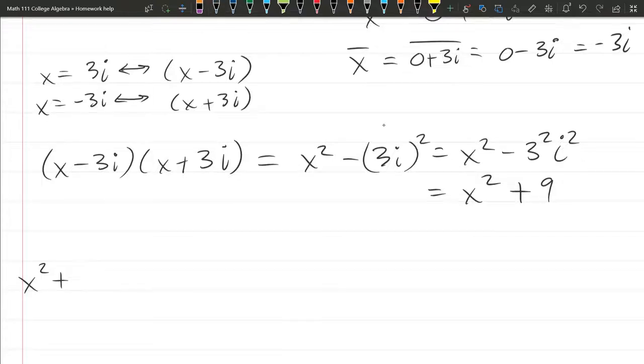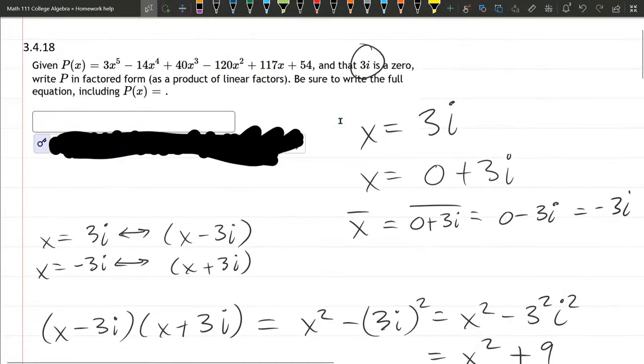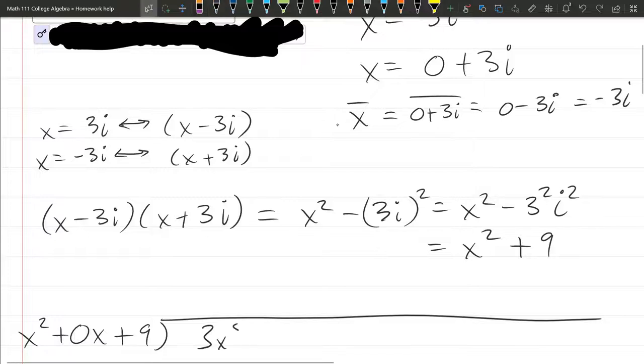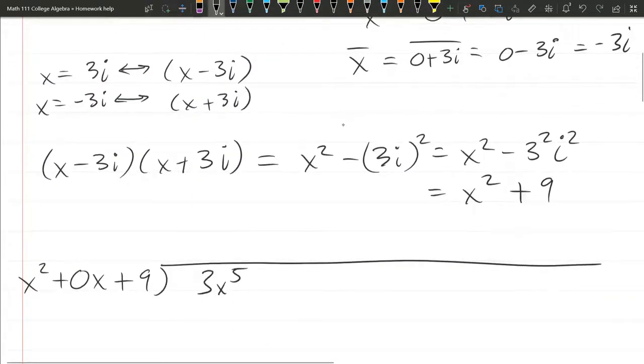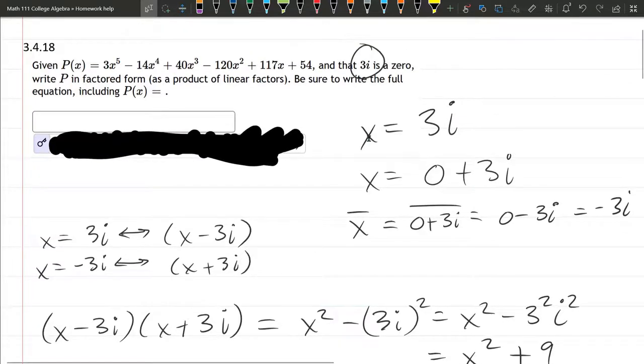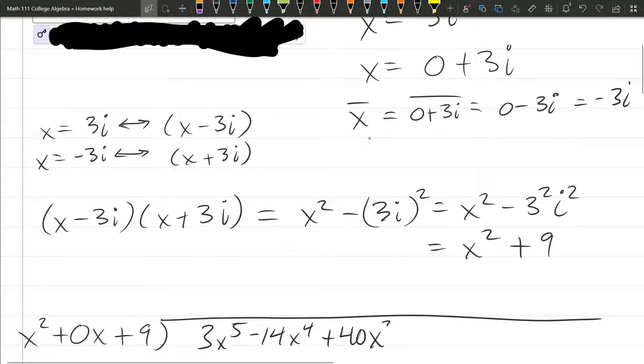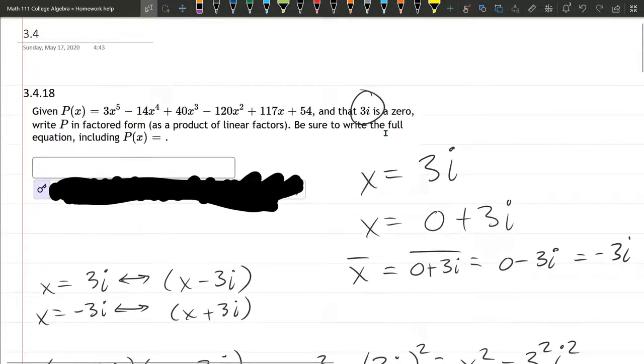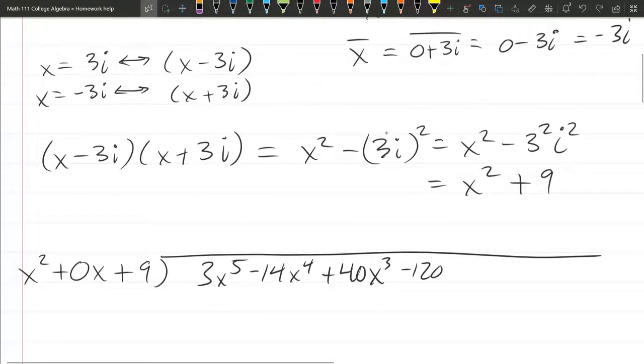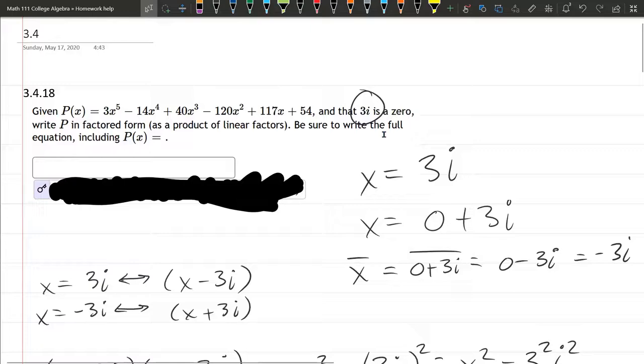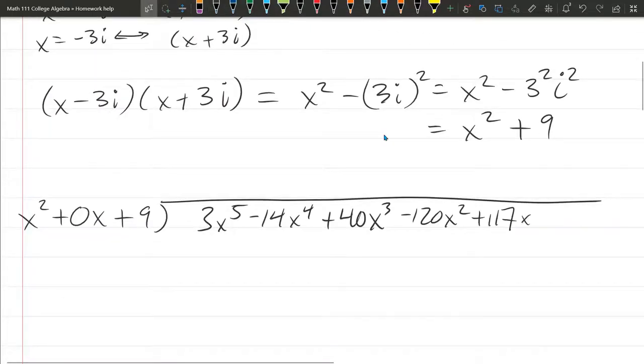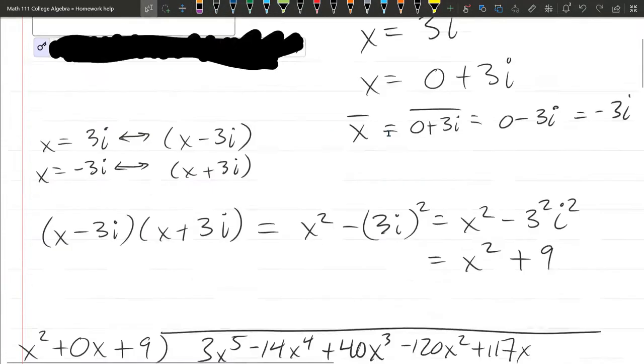So x squared plus 0x to the first plus 9 is going to divide into P of x: 3x to the fifth minus 14x to the fourth plus 40x cubed minus 120x squared plus 117x plus 54.